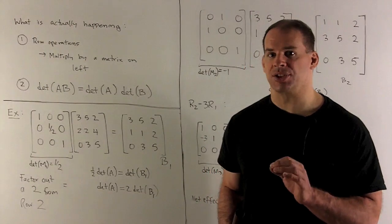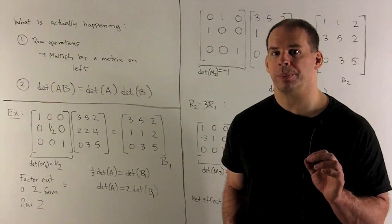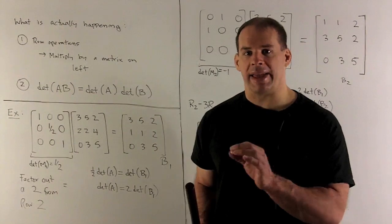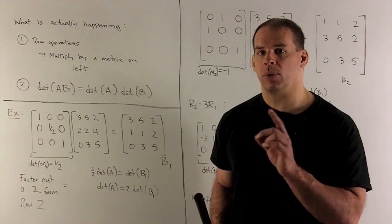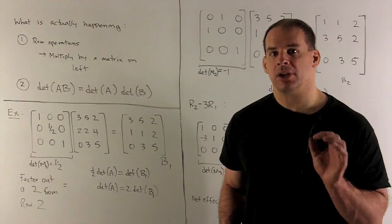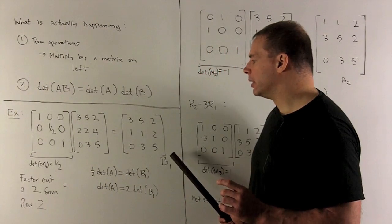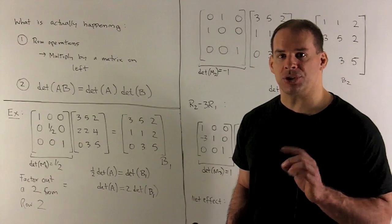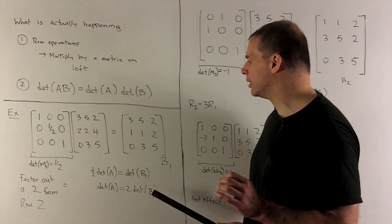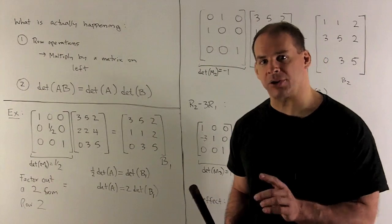Let's take a look at our special case. Our first row operation was factoring a 2 out of row 2, so we want to wind up with matrix B1. To get from A to B1, we multiply on the left by the diagonal matrix with entries 1, one-half, 1. Applying the determinant to both sides, the determinant of that diagonal matrix is one-half. So we have one-half times det(A) equals det(B1), which means det(A) equals 2 times det(B1) — we're just factoring out a 2.